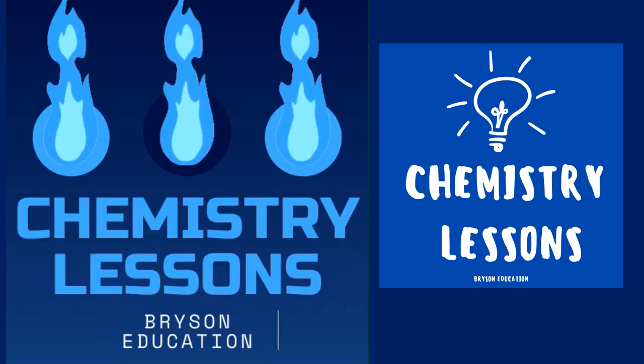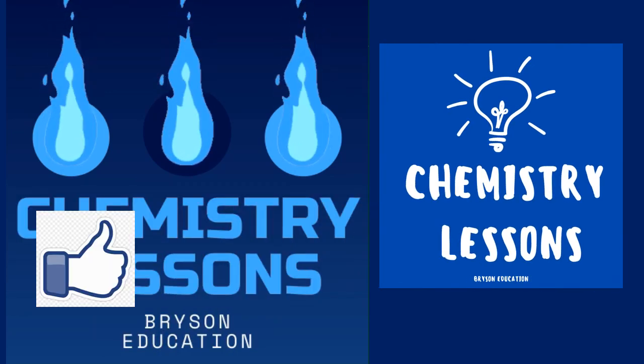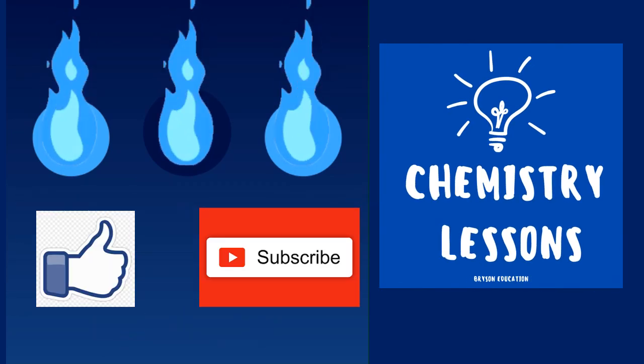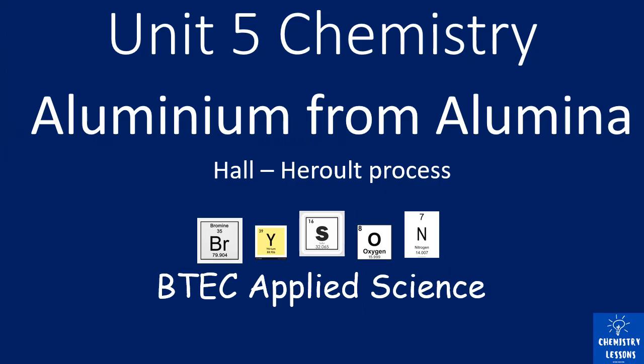Welcome to my channel on chemistry lessons, make sure you like and subscribe. This is a BTEC Applied Science lesson for Unit 5 Chemistry, and it looks at how we get aluminium from alumina.